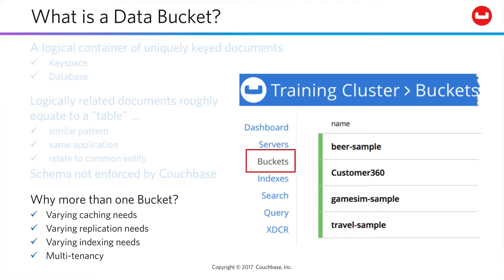So why would you ever need more than one bucket? Caching, replication, and indexing are all configured at the bucket level in Couchbase. So if you have varying needs across any of these three vectors, you would move documents into a new bucket or create them in a new bucket. This is also how you would support multi-tenancy from a Couchbase cluster.